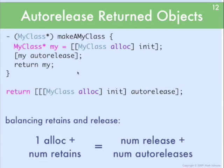Going over this one more time in a slightly different way: think about what would happen if you didn't auto-release this object. You'd be returning the object out of this method with a retain count of 1, which means it would have to be released by something. The way this convention works is: the code that creates an object should be responsible for cleaning that object up — for releasing it. Because when you create it, it has a retain count of 1, so you should be responsible for making the retain count go back down to 0. That's what auto-release is. The auto-release doesn't make the retain count go to 0 right now, but it's a promise that sometime in the future — at the end of the event loop — the retain count will go down. That's how this method can keep the convention that if you create an object, you're responsible for cleaning it up.